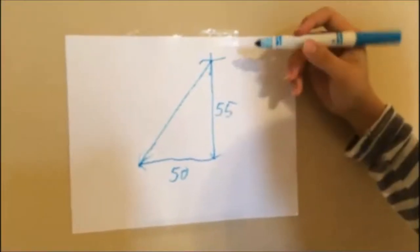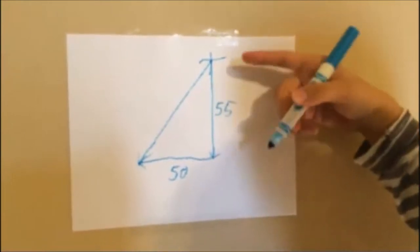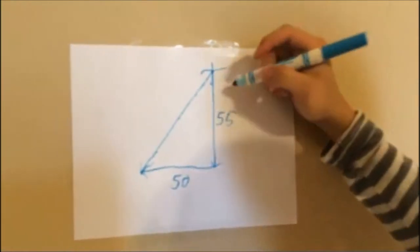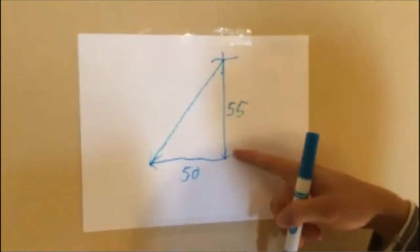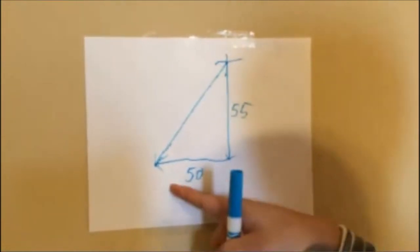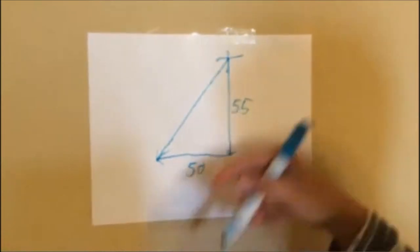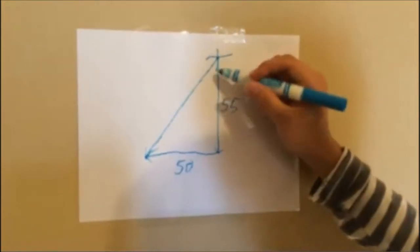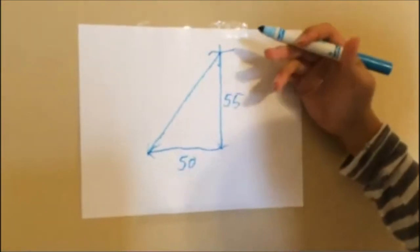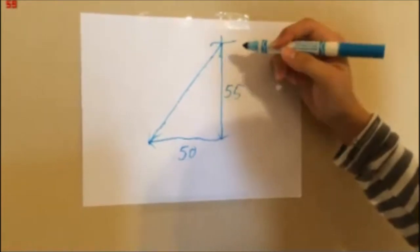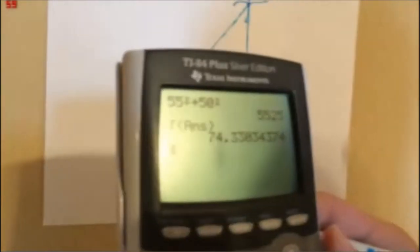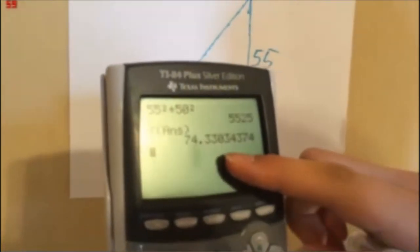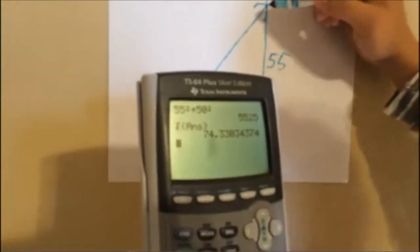I am going to show you how to get the resultant vector from the video that you just watched. I went 55 steps down and then 50 steps left. To get the distance, I used the Pythagorean Theorem: A squared plus B squared equals C squared. I have that on the calculator and it came out to 74.